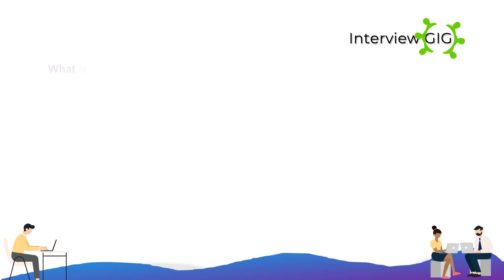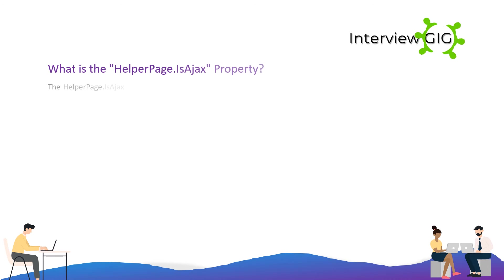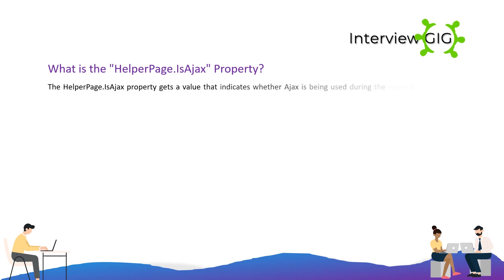What is the HelperPage.IsAjax property? The HelperPage.IsAjax property gives a value that indicates whether Ajax is being used during the request of the web page.